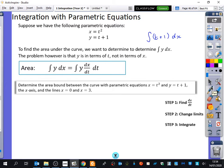So let's actually do this. It says, determine the area bound between the curve with parametric equations x equals t squared and y equals t plus 1, the x-axis, and the lines x equals 0 and x equals 3. So really, what they're wanting us to work out, if this was a normal question, it would be integrating between 0 and 3. We would integrate y with respect to x. But ours is parametric. So we need to make sure that we're going to be doing this correctly. Step one, find out what dx/dt is.